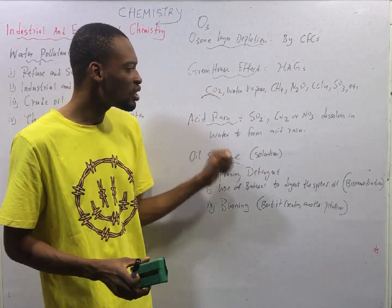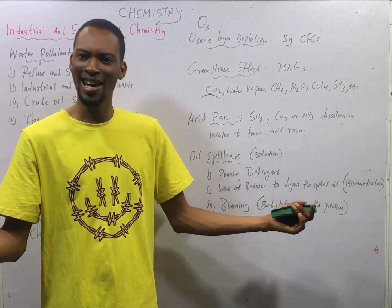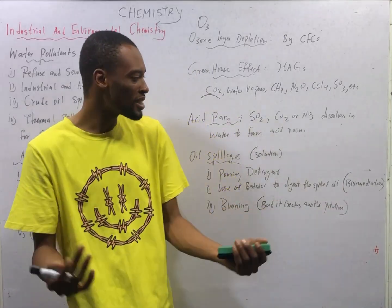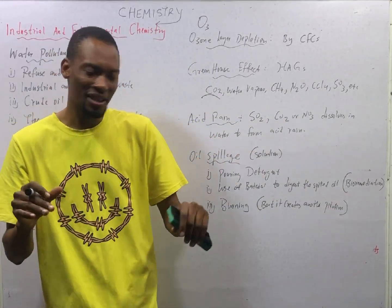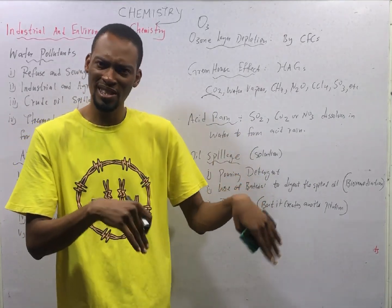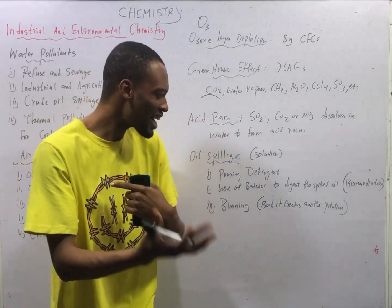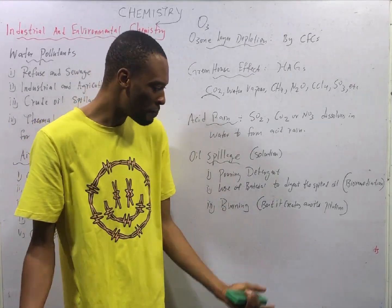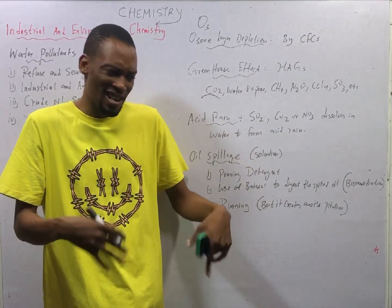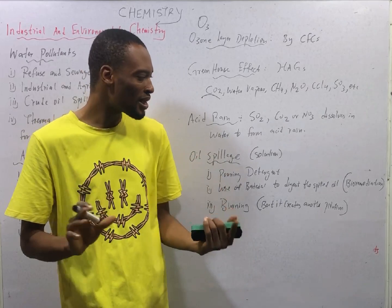Acid rain is when some gases mix with water to form an acid. According to Arrhenius, an acid is any substance which, when dissolved in water, produces hydrogen ions, while a base produces hydroxide ions. According to Brønsted and Lowry, acids are proton donors while bases are proton acceptors. And according to G.N. Lewis, acids are electron pair acceptors while bases are electron pair donors.